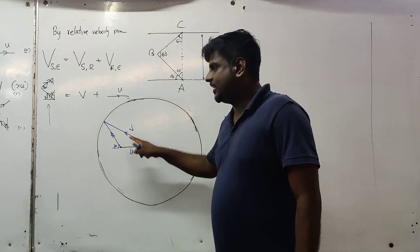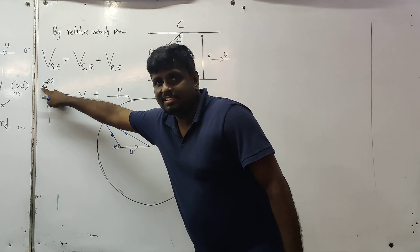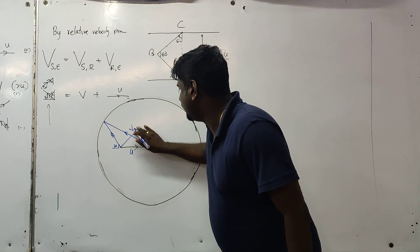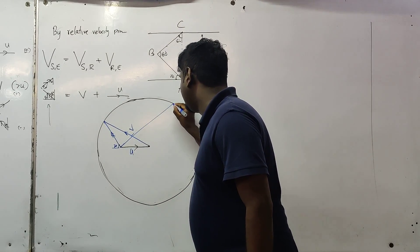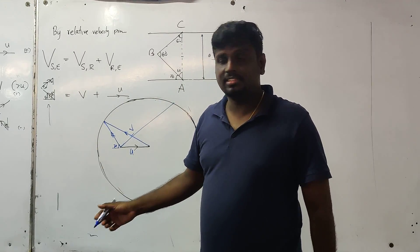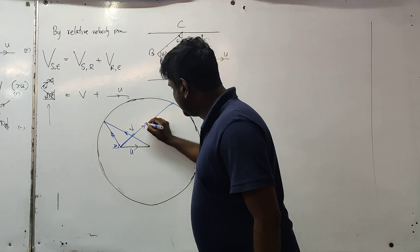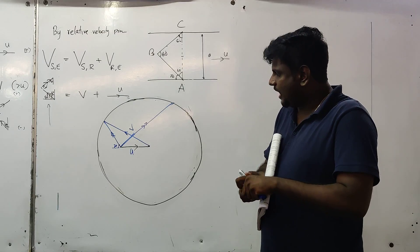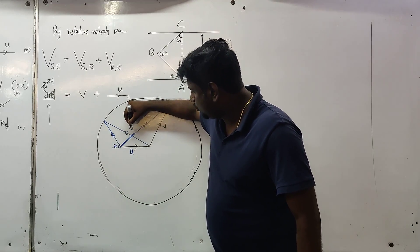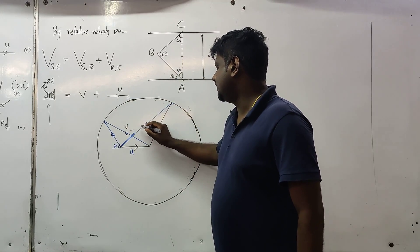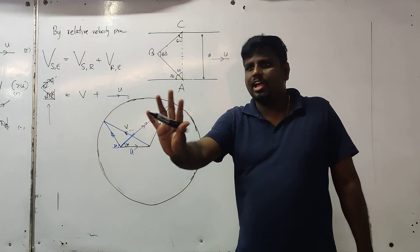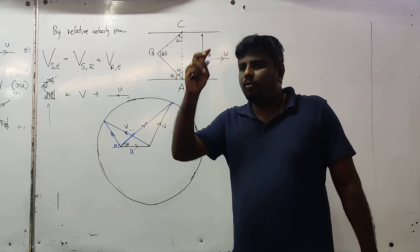Again V, again U. Now the direction is from here to here. I do like this — you can connect here. Sometimes the resultant may be perpendicular to this one, we don't know. So I am doing something like here — double arrow. Now I connect this. This is V, this is also V. With horizontal 30, vertical 60. Try to draw the triangle first.